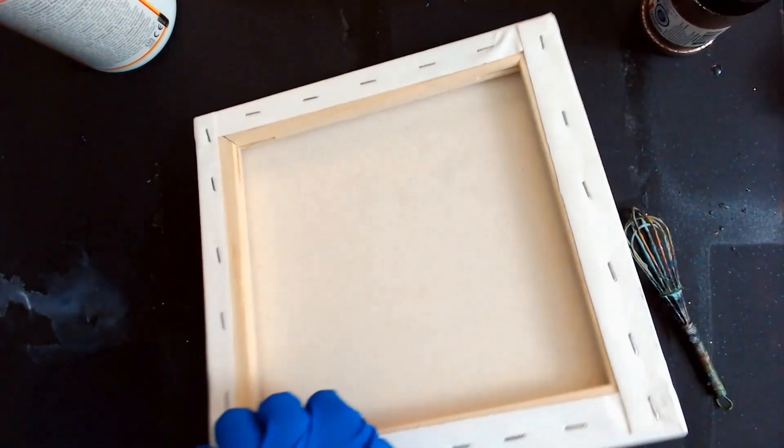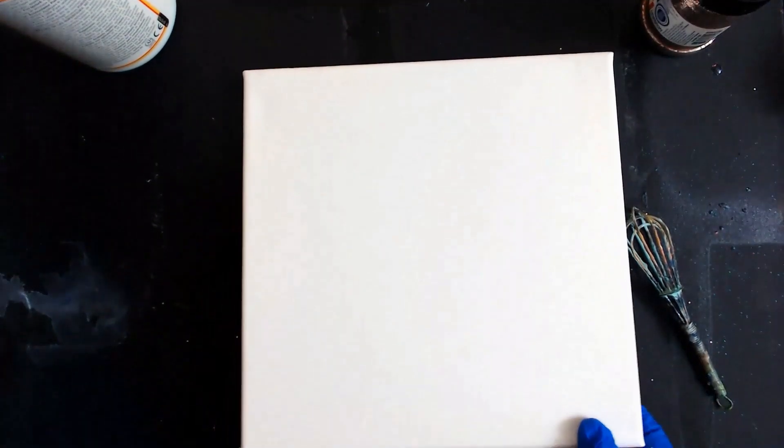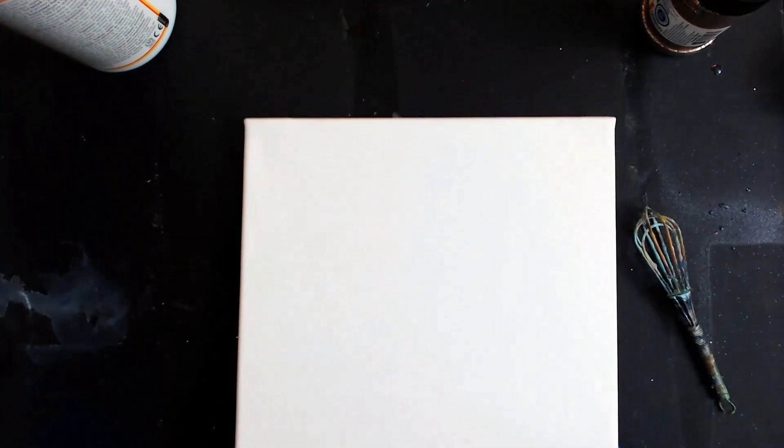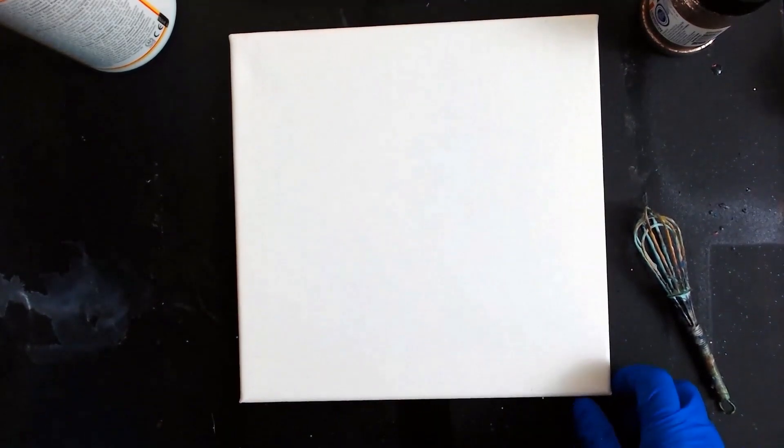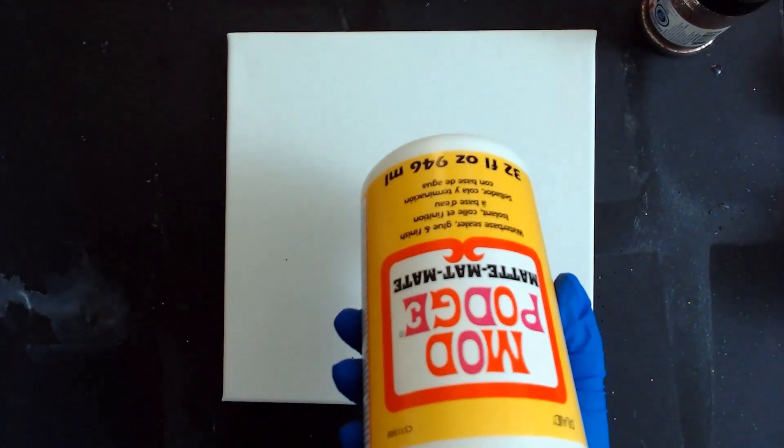Okay. So I've got a regular canvas here, stretched on the back, ten inches square. Got it at Michael's on clearance. Good old clearance section at Michael's. And then I've got my matte Mod Podge.